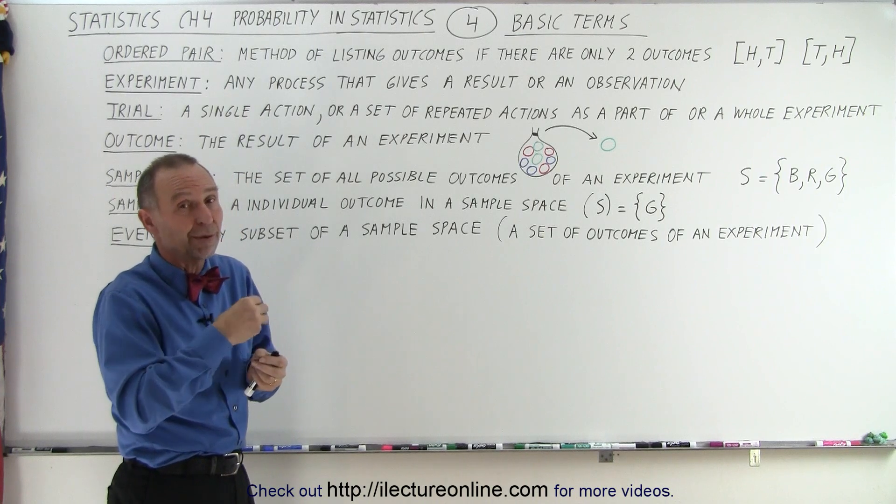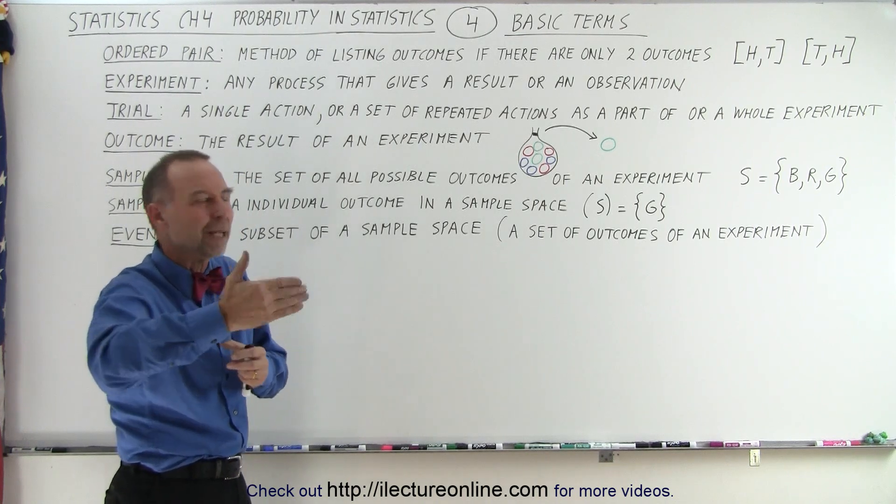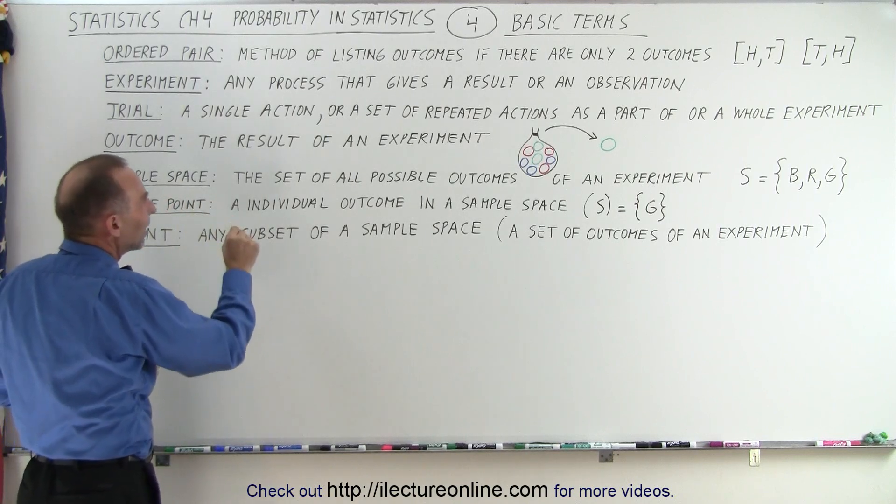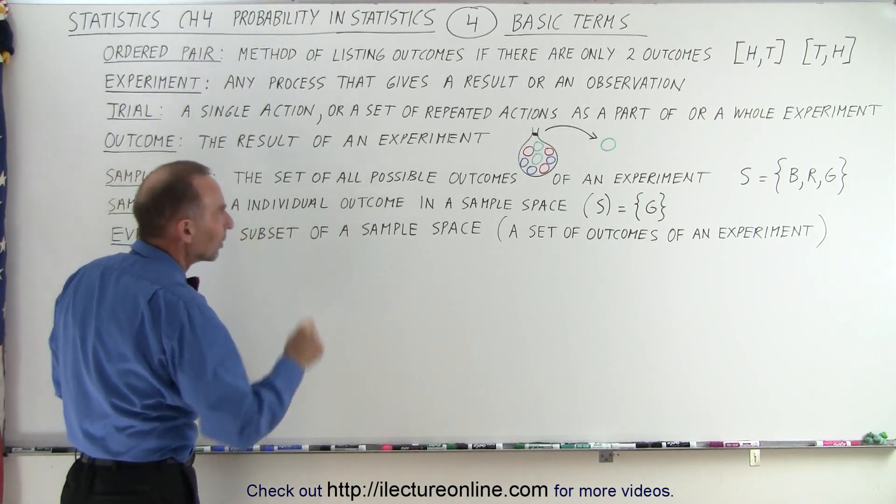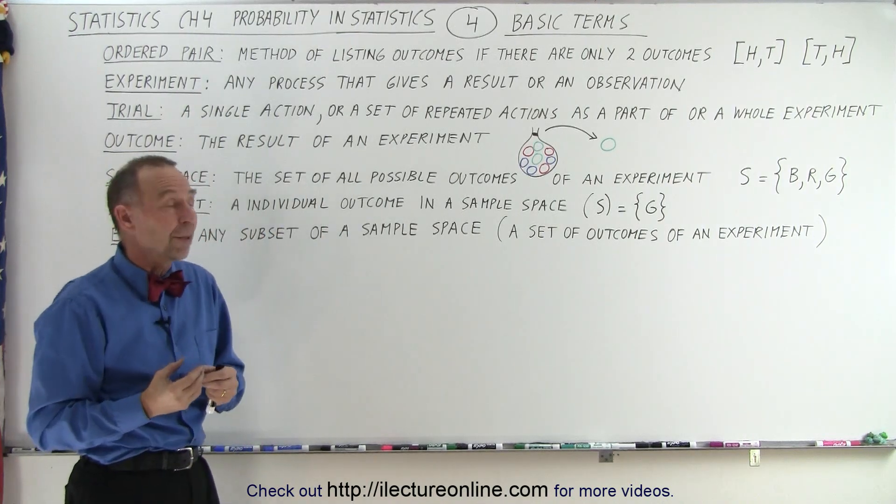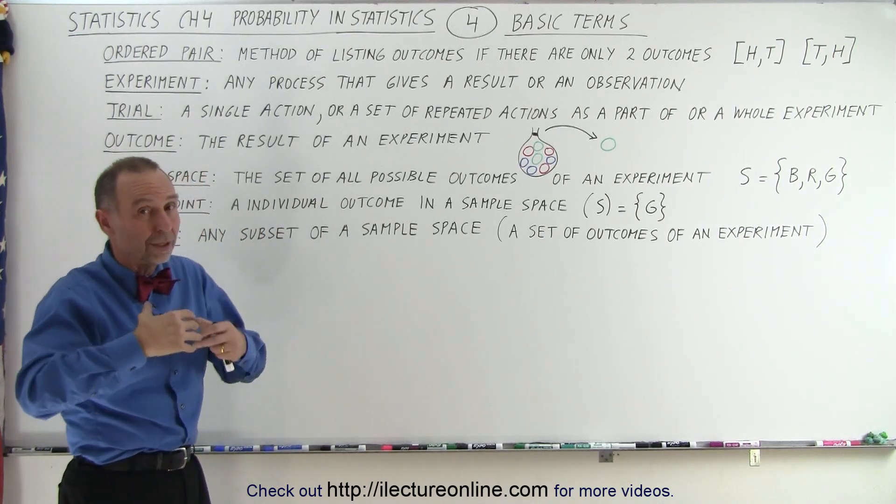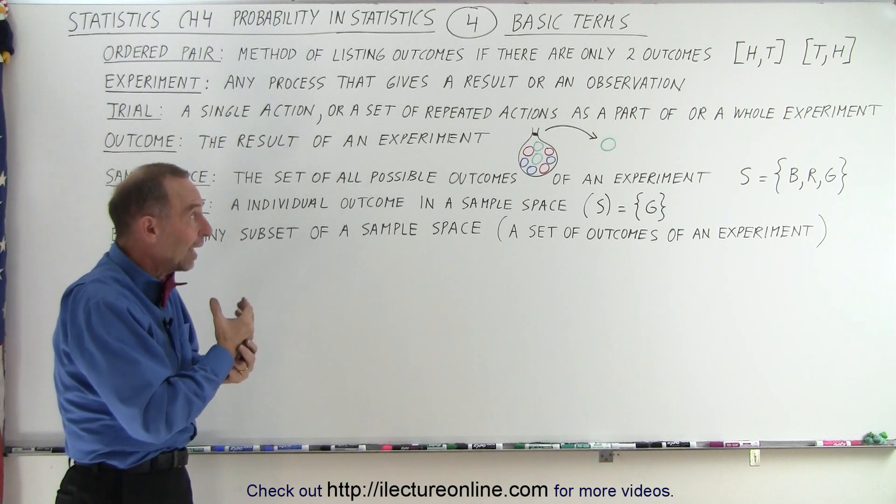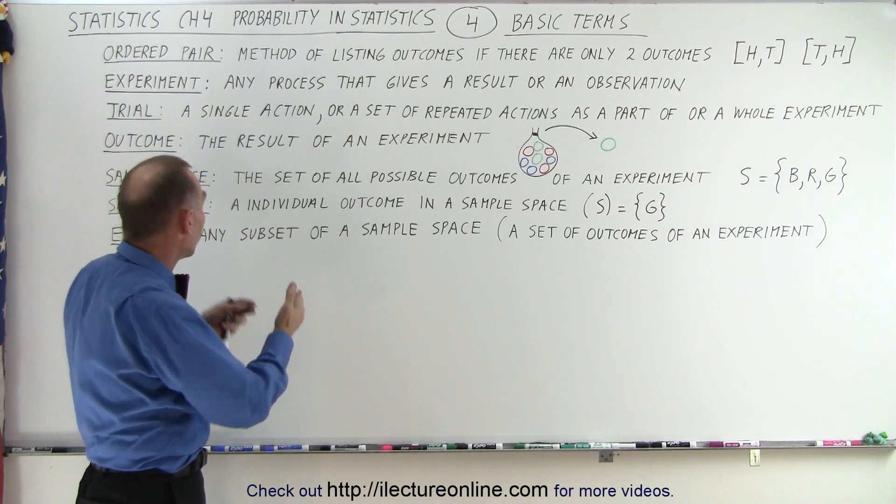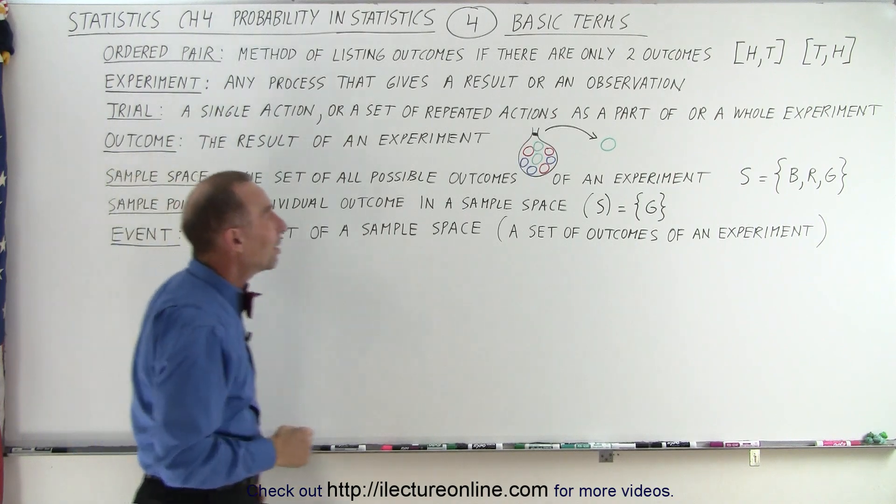And that is the theoretical probability. Of course, the experimental probability would be very different, until I did it many, many times. The sample space is the set of all possible outcomes. So in this case, if there are three different colors of marbles in the bag, and I grab one marble, the different outcomes are that I could have a green marble, a red marble, or a blue marble. And so that would be the sample space.